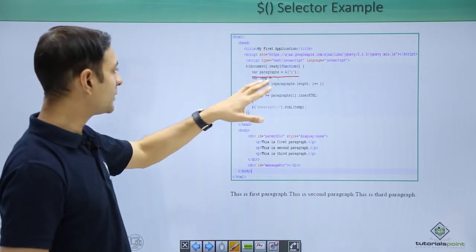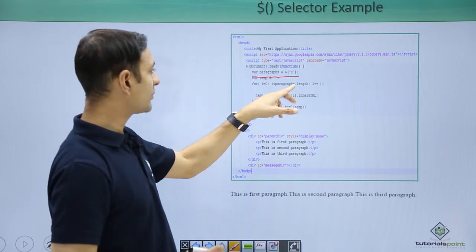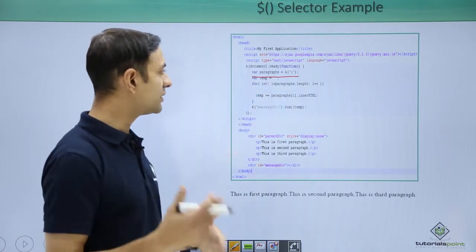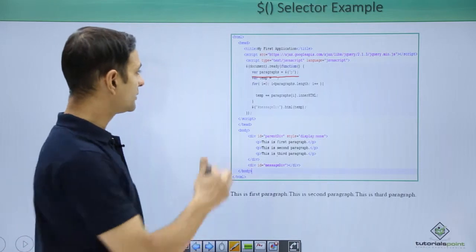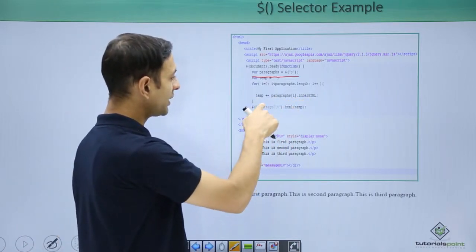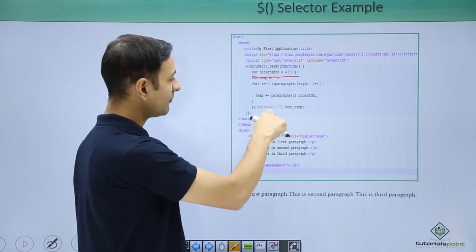Then var temp is empty. For i equals 0, i less than paragraph dot length, i plus plus - I am simply iterating over the paragraphs. Then getting the inner HTML of each paragraph and putting the temp variable in my message div.